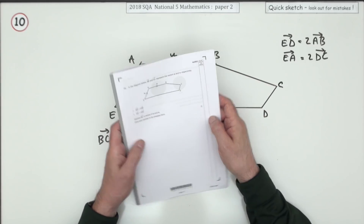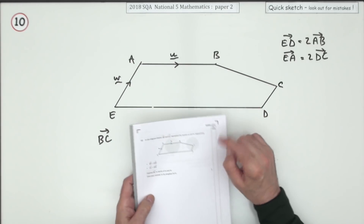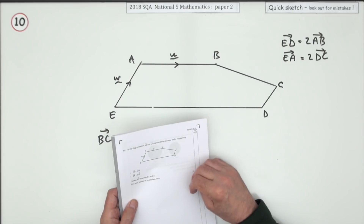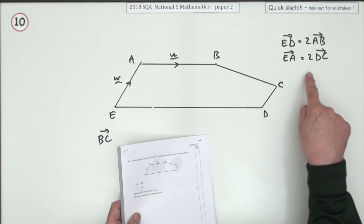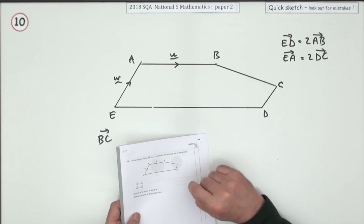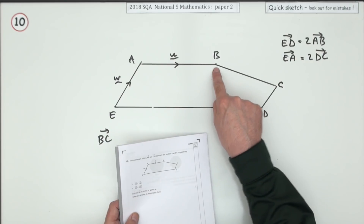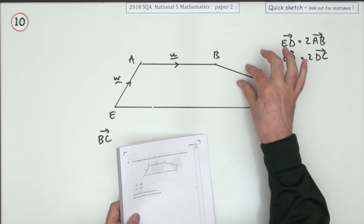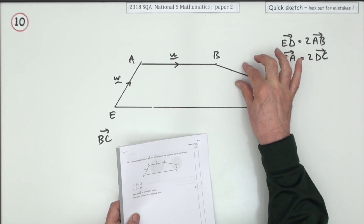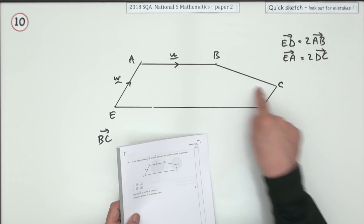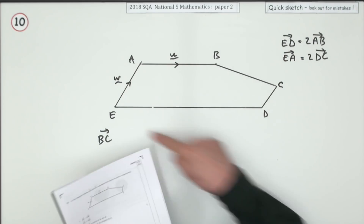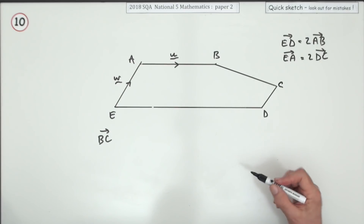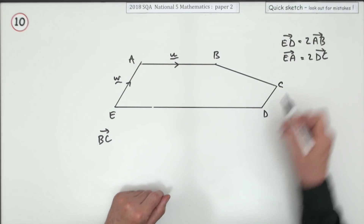Number 10 is a vector pathways question. You've got a diagram and it tells you an additional couple of pairs of facts. In the end you have to find BC. How would you get from B to C if you're not allowed to travel along that path? There's only one way — the long way around — so it's just a case of filling in the bits and pieces.